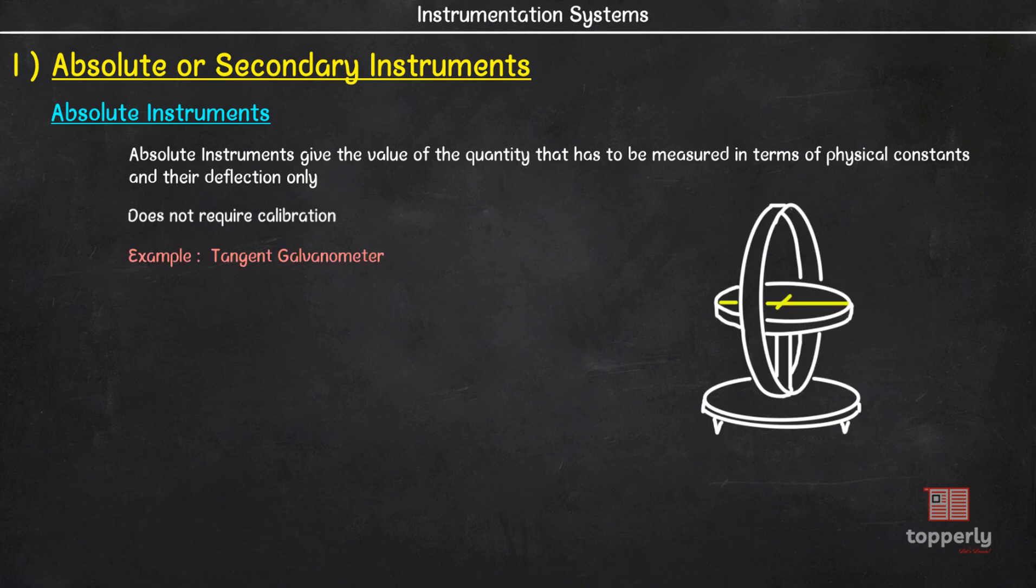An example of absolute instrument is tangent galvanometer which we use in our labs to detect if there is current or to detect the direction of a DC current flow. The tangent galvanometer gives the value of current in terms of the tangent of deflection produced by the current, the radius and number of turns of the wire used and the horizontal component of Earth's magnetic field.